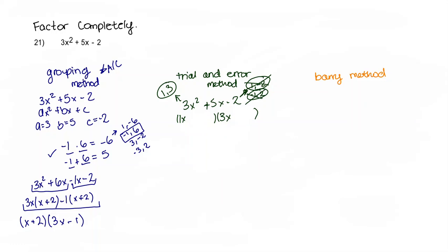So instead of writing 1 and negative 2, I'm going to write negative 2 and 1. So I'm going to write negative 2 in this box, and then positive 1 in this box. So let's try that. So negative 2 and 3x make negative 6x, and then 1x times 1 makes x. We put these together, that makes negative 5x, which is not what we have here because we want positive 5x. So these are not our factors.